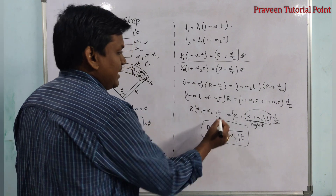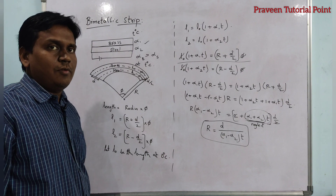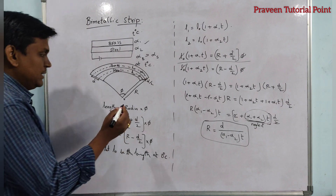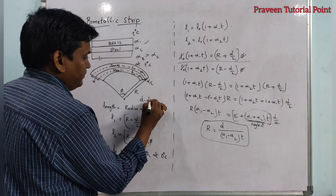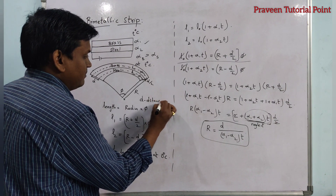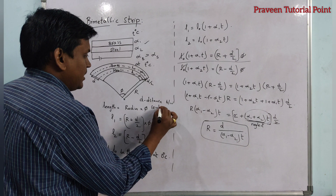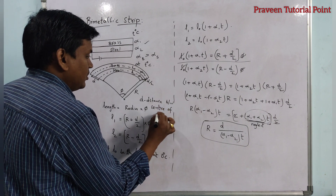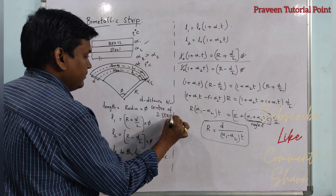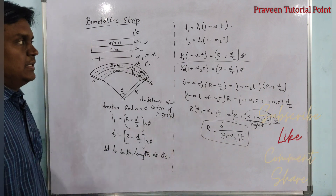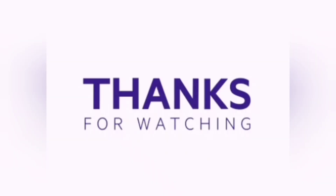Where d is the distance between the centers of the two strips. In this way we find out the radius of curvature r of the bimetallic strip.